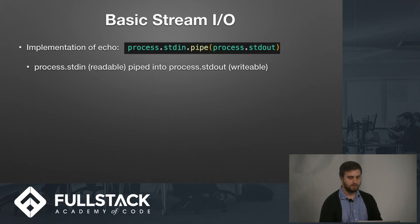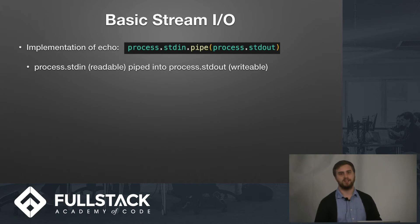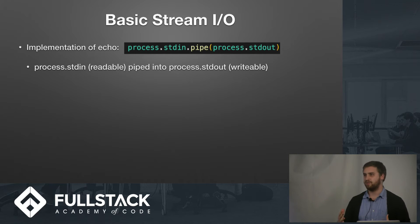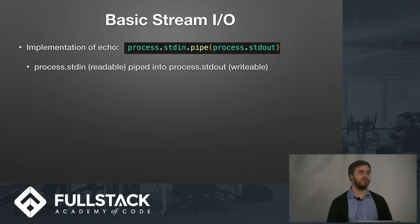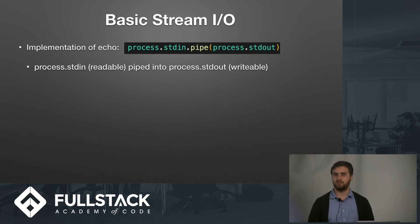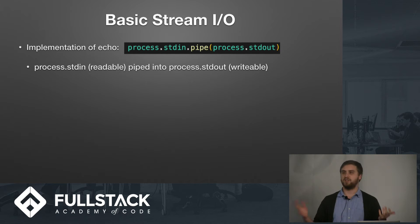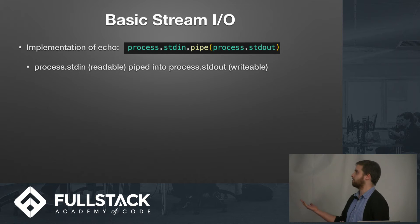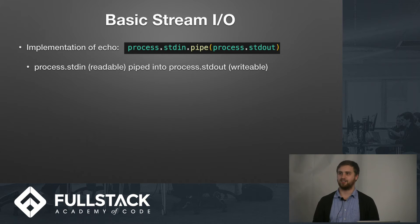Here is the implementation of echo that you would have in shell. You just pipe process.stdin into process.stdout. So anything you type into Node will be output back to you — that's like the hello world of streams in Node. You probably don't even know those are streams. Console.log is a stream — it's just the same thing as process.stdout, essentially.